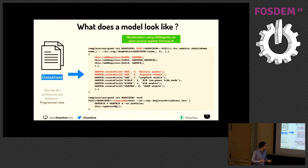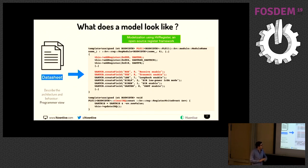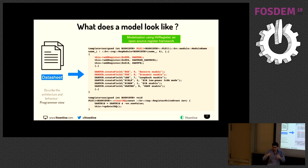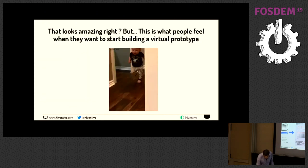What does a model look like? How do you build a model? We take a datasheet, extract the architecture behavior from the programmer's view, and describe — for example for the PL011 — all registers, fields, and their behavior. For example, when you write on a specific register — here it's for clearing the interrupts — we update the interrupt status to propagate the value.